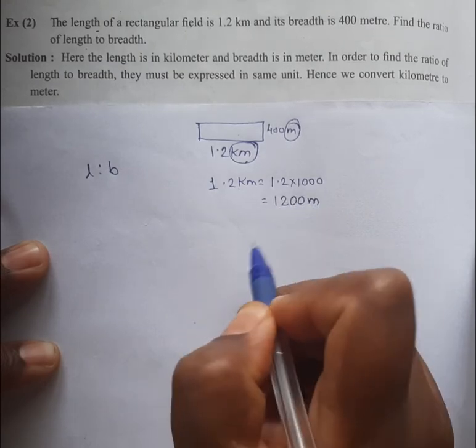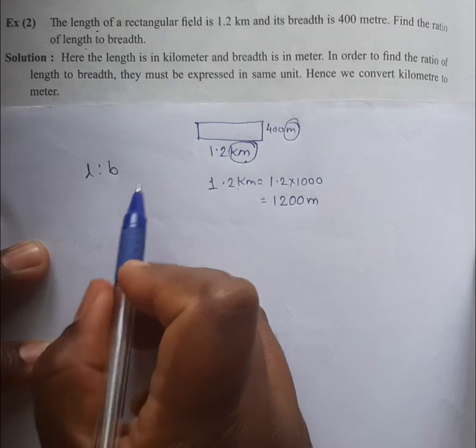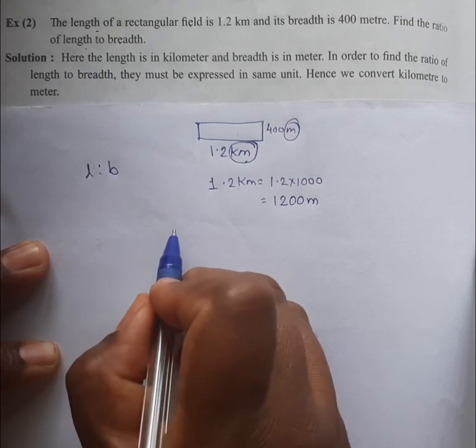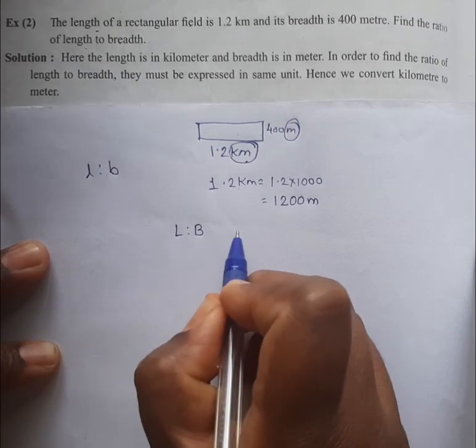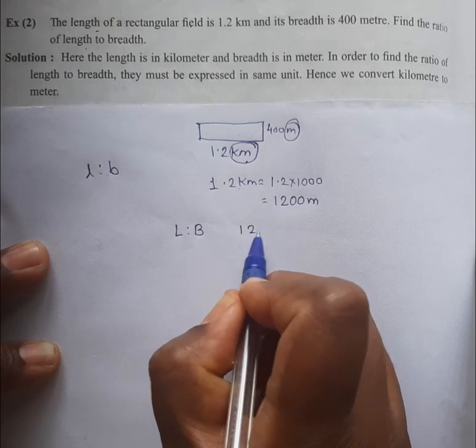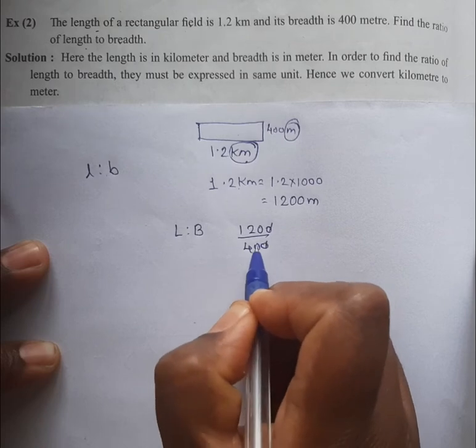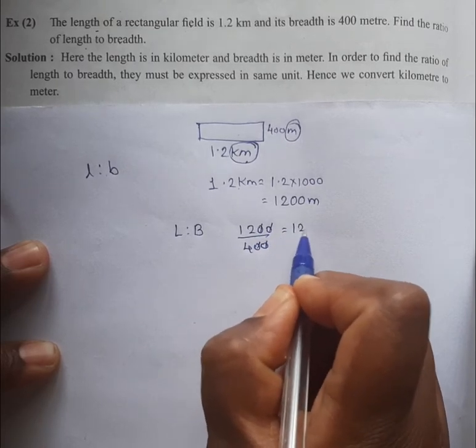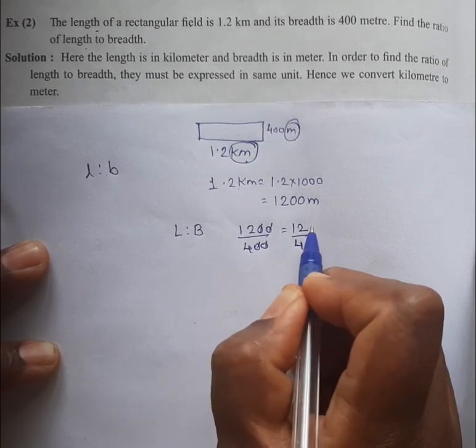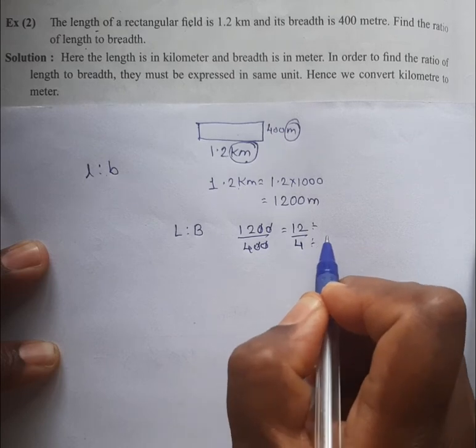Now what we have to do is find the ratio, that is L is to B, means 1200 upon 400. Cancel the zeros—12 upon 4. We know that 12 and 4 both come in the table of 4.